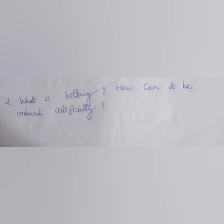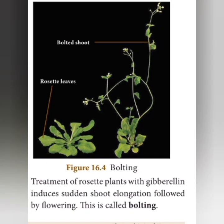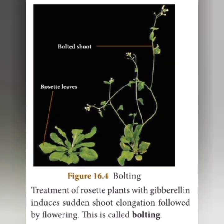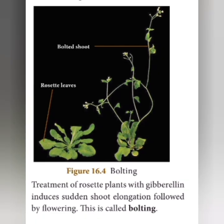The next question is: what is bolting? How can it be induced artificially? Bolting means sudden shoot elongation followed by flowering. It is induced by the hormone called gibberellin. It is one type of plant hormone.